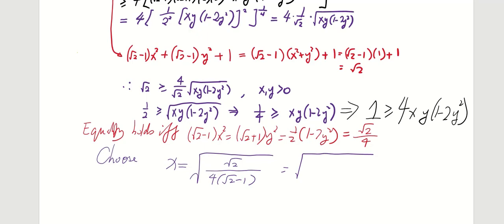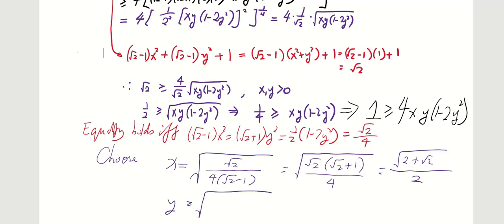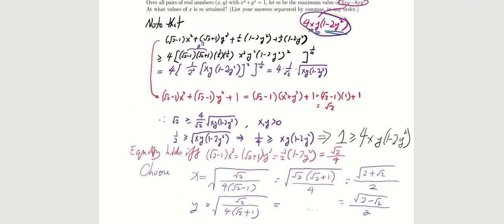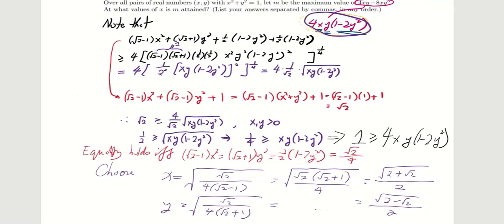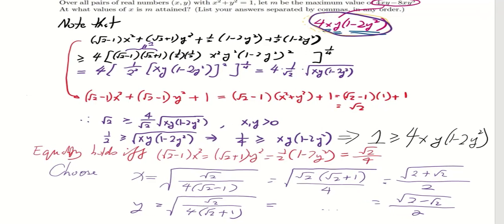Note that 1/(sqrt(2) minus 1) equals sqrt(2) plus 1. Therefore x equals sqrt((2 + sqrt(2)) / 2). Using a similar technique, y equals the square root of [sqrt(2)/4] divided by (sqrt(2) plus 1), which equals sqrt((2 minus sqrt(2)) / 2). With this, we find that the maximum of 4xy(1 minus 2y squared) equals 1, attained at the values of x and y as stated.